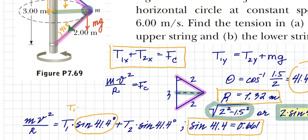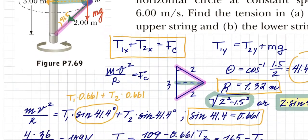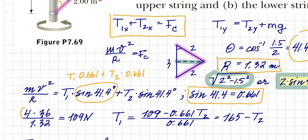T1 times 0.661 plus T2 times 0.661 equals mv squared over r. So then r is 1.32, mass of the ball is given to be four kilograms—right here, hence I'm writing four—that's mass, this x is v squared, and that's the radius which we had found before.